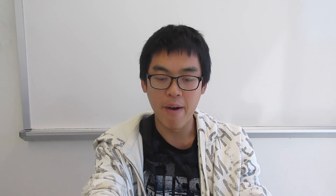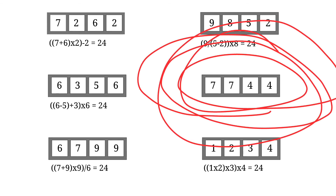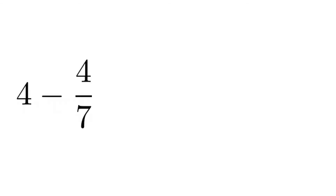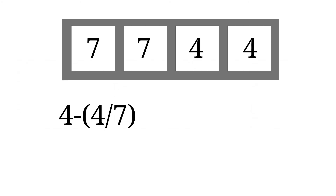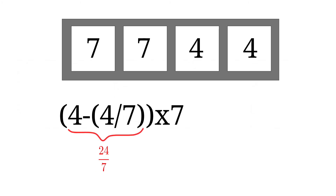So this problem — who would have thought that you need to multiply 16 by 9? But the monster one is 7, 7, 4, 4. The solution goes like this: you first divide 4 by 7, which becomes 4/7. Then you subtract 4 by 4/7 — using arithmetic on fractions, you get (28 minus 4)/7, which is 24/7. Then 24/7 multiplied by 7 gives you 24.